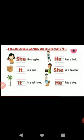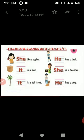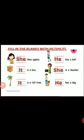First one: a boy likes apples — he likes apples. Girl picture: she likes apple. Das is a box — object — it is a box. Das is a tall tree, a coconut tree, that's an object — it is a tall tree. Das has a ball — boy — he has a ball. Das is a teacher — she. Das has a dog — boy — he has a dog. Object: it is a dog. Boy — he. Girl — she. Object — it.